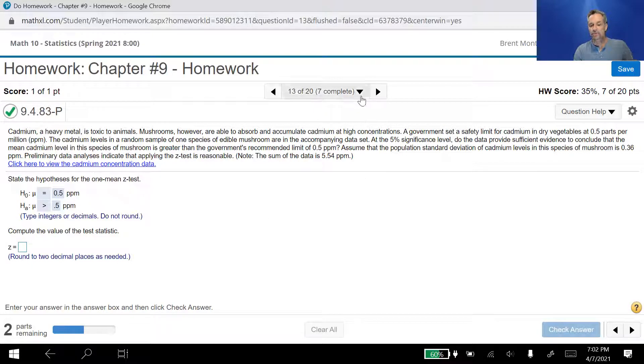Now, it says assume the population standard deviation, or population standard deviation. Now this is important as well. Population standard deviation, that's sigma, of the species of mushrooms is 0.36 parts per million. The reason this is a Z test and not a T test is because I have the population standard deviation sigma. If I didn't have sigma, it would be a T test. That's the only difference in those two tests as far as when we use which test.